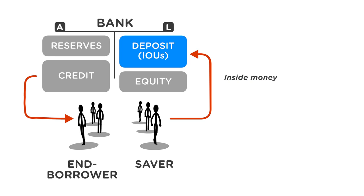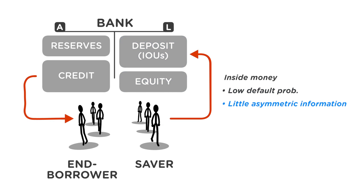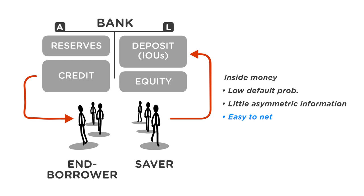Since they are short-term, they are readily available. Due to the protection from the equity of the bank, the default probabilities are low — that is, credit risk is limited. Hence, there is little asymmetric information about the value of these IOUs. Because of this, it is easy to net IOUs across the whole financial system, and hence it serves as a means of payment.